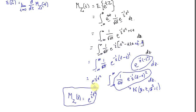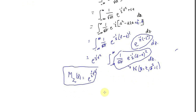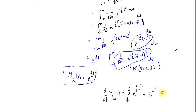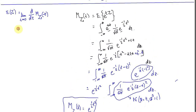To find the expectation using the MGF, we take the derivative with respect to t of the MGF and evaluate at t equals 0. The derivative of e to the power of one half t squared is t times e to the power of one half t squared by the chain rule. As t goes to zero, t goes to zero and e to the power of one half t squared goes to one, so zero times one equals zero. The expected value of Z is 0, confirming what we found earlier.